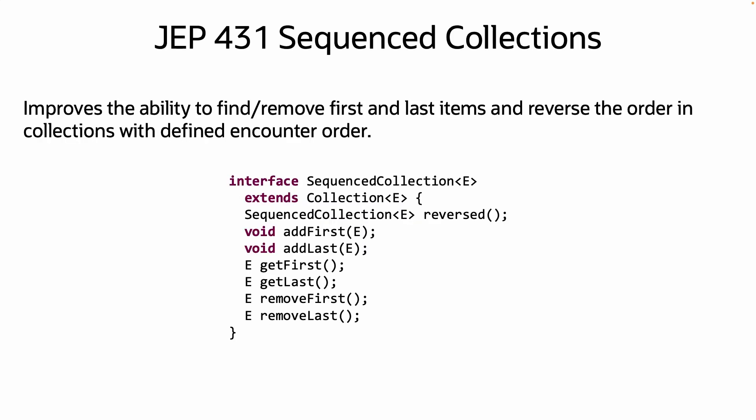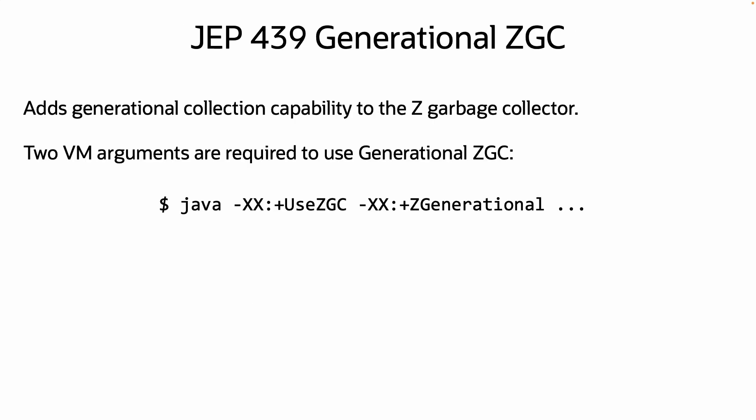Sequenced Collections is a new set of interfaces added to the collections hierarchy for collections with a defined encounter order, like ArrayList, SortedSet, and others, making tasks like finding the last element or going through a collection in reverse order easier.